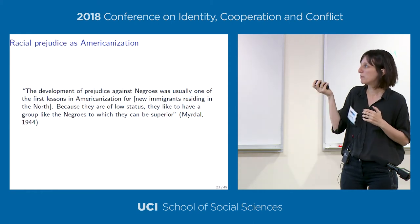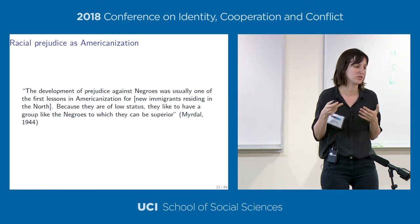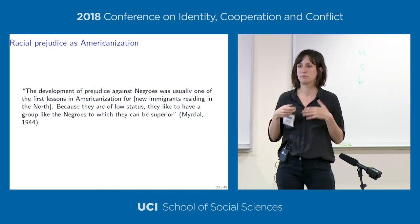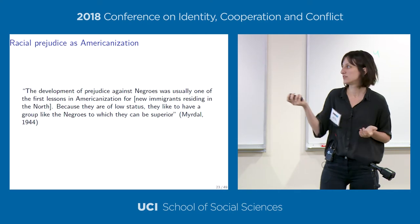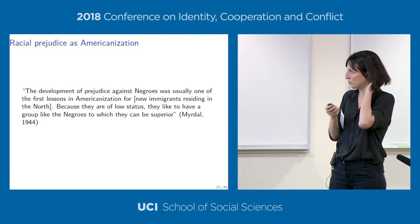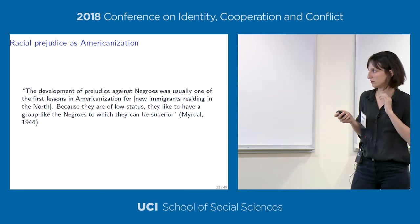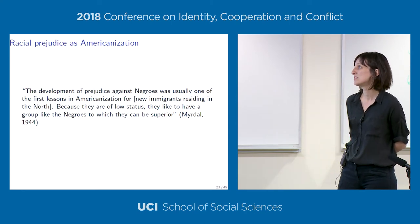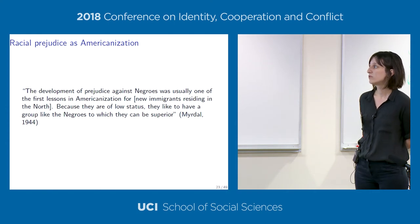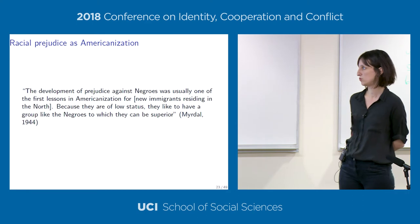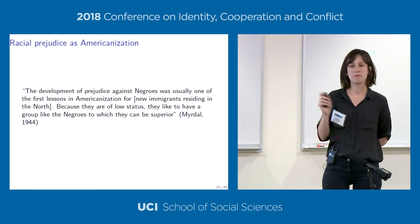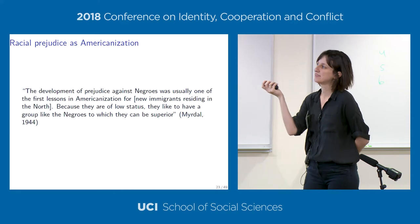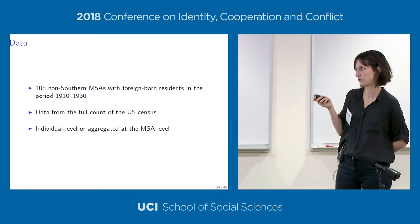The model could be extended in many ways. One part not in the model but noteworthy is that part of what constitutes assimilation is adopting the racist attitudes of the majority. As Gunnar Myrdal—the Swedish economist who wrote a three-volume book on the Negro problem in the U.S. in the 1940s—noted: 'the development of prejudice against Negroes was usually one of the first lessons in Americanization for new immigrants residing in the North, because they are of low status, they like to have a group like the Negroes to which they can be superior.'